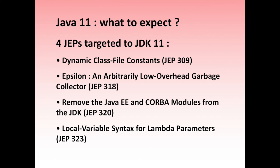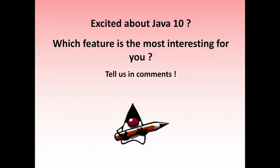JDK 11 is already planned for September 2018, with 4 JEPs targeted for JDK 11: Dynamic Class-File Constants in JEP 309, Epsilon — an arbitrarily low-overhead garbage collector — in JEP 318, Remove the Java EE and Corba modules from the JDK in JEP 320, and Local Variable Syntax for Lambda Parameters in JEP 323. Excited about Java 10? Which feature is the most interesting for you? Tell us in the comments, and don't hesitate to subscribe to the channel to discover more Java content and tutorials.